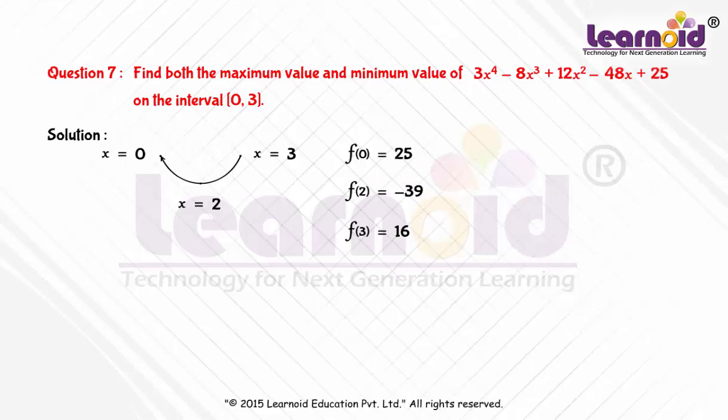So f(0) equals 25, f(2) equals minus 39, f(3) equals 16. Hence, we can conclude that the absolute maximum value of f(x) on closed interval [0,3] is 25 at x equals 0, and the absolute minimum value of f is minus 39 at x equals 2.